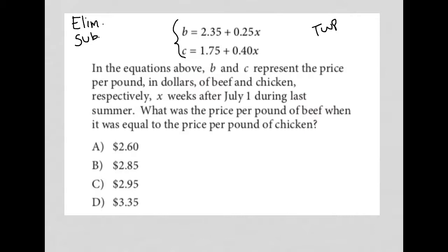Let's read it and see exactly what we need to do to solve the question. In the equations above, b and c represent the price per pound in dollars of beef and chicken, so I'm going to write that down. B equals beef, and C is chicken.